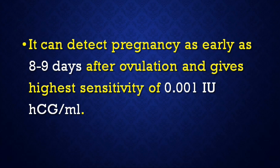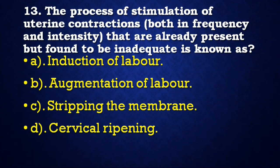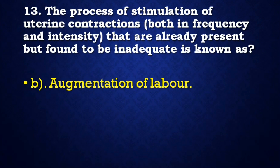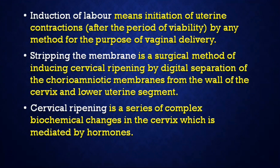Next question: The process of stimulation of uterine contractions — both in frequency and intensity — that are already present but found to be inadequate is known as — induction of labour, augmentation of labour, stripping the membrane, or cervical ripening? Correct answer is augmentation of labour. Induction of labour means initiation of uterine contractions after the period of viability. Stripping the membranes is digital separation of chorioamniotic membranes from the cervix wall. Cervical ripening is a series of complex biochemical changes mediated by hormones.